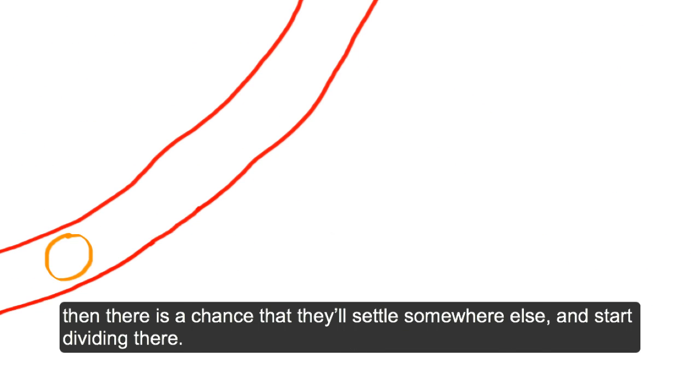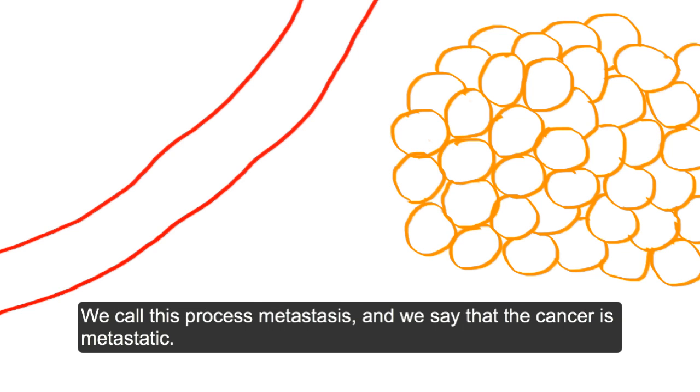then there is a chance that they'll settle somewhere else and start dividing there. We call this process metastasis. And we say that the cancer is metastatic.